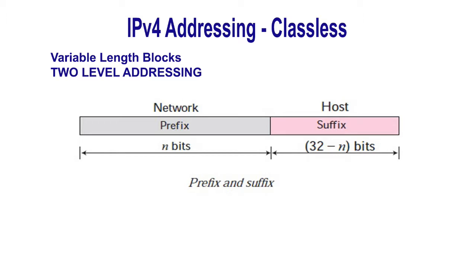In classful addressing, the length of NetID depends on the class of addresses — it can be only 8, 16, or 24. In classless addressing, the length of prefix N depends on the size of the block. It can be 0, 1, 2, 3, up to 32. In classless addressing, the value of N is referred to as prefix length, whereas the value of 32 minus N is referred to as suffix length.